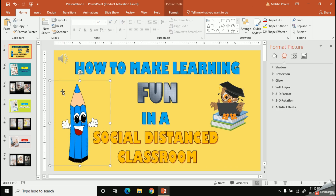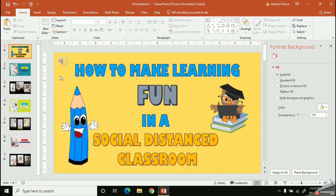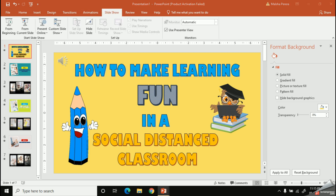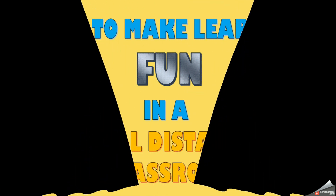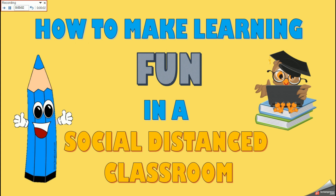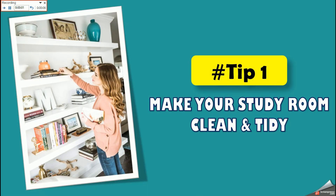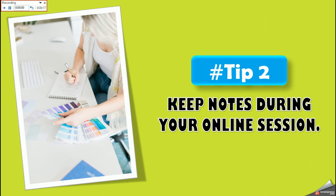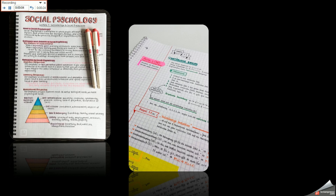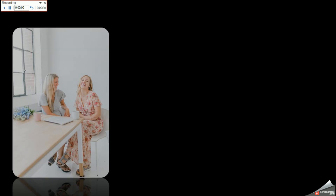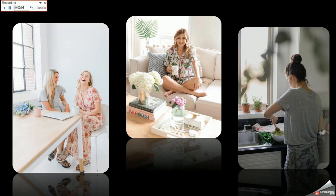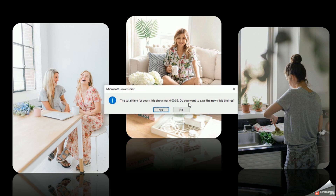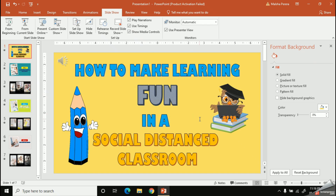This next option is very important. We are going to give timing for each of our slides. To do this, click the Slideshow tab, then select Rehearse Timing. When you are okay with the time for the first slide, move to the next slide using the arrow keys on your keyboard. Do this until the end, and if you are satisfied with your timing, click Yes to save it.